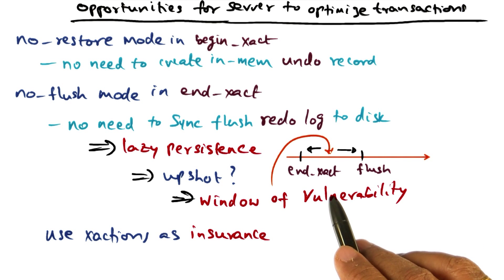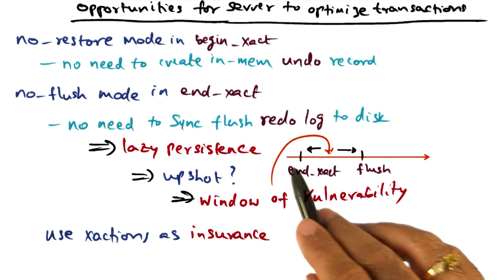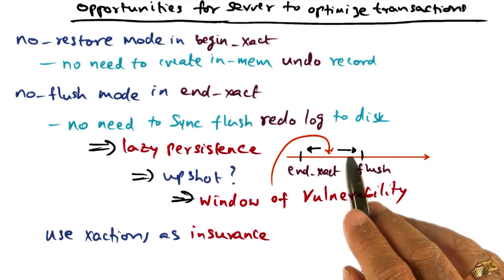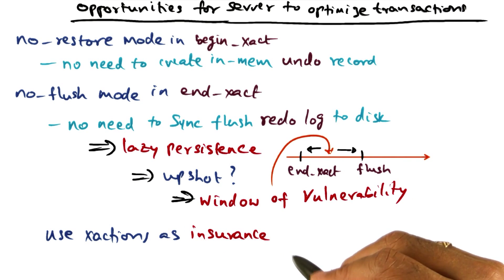And the app developer is taking a chance, saying that I am so sure that no crash is going to happen in this window, I'm going to go ahead and say no flush. So in other words, the transaction is being used as an insurance.